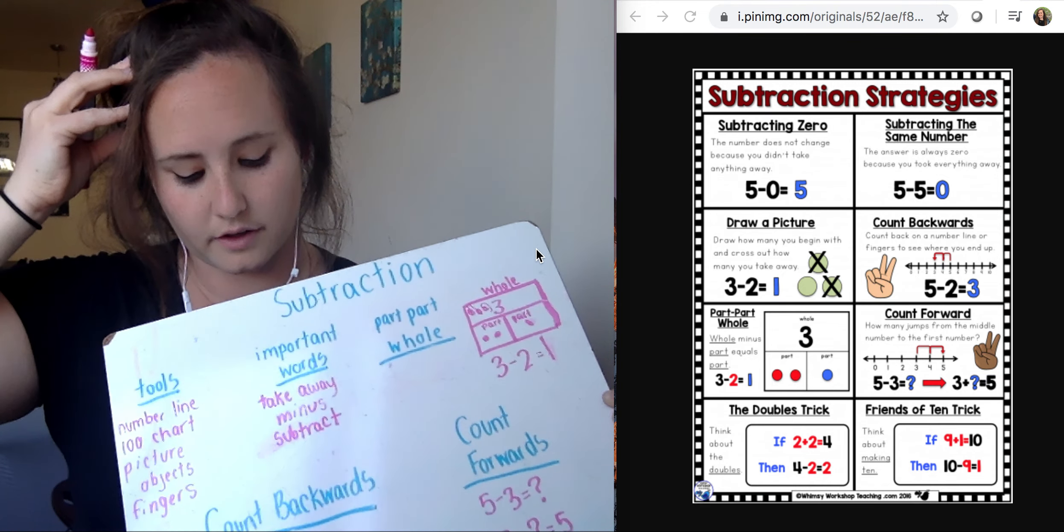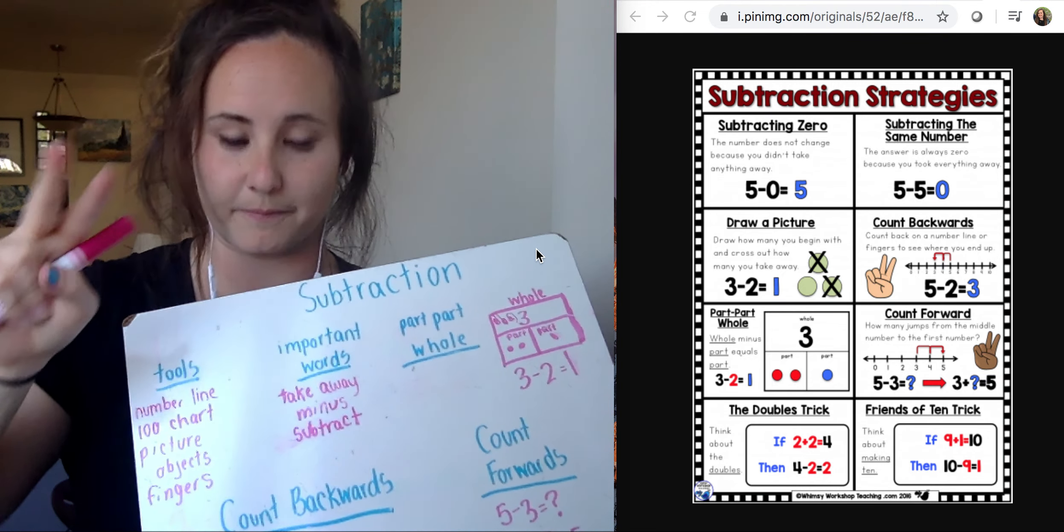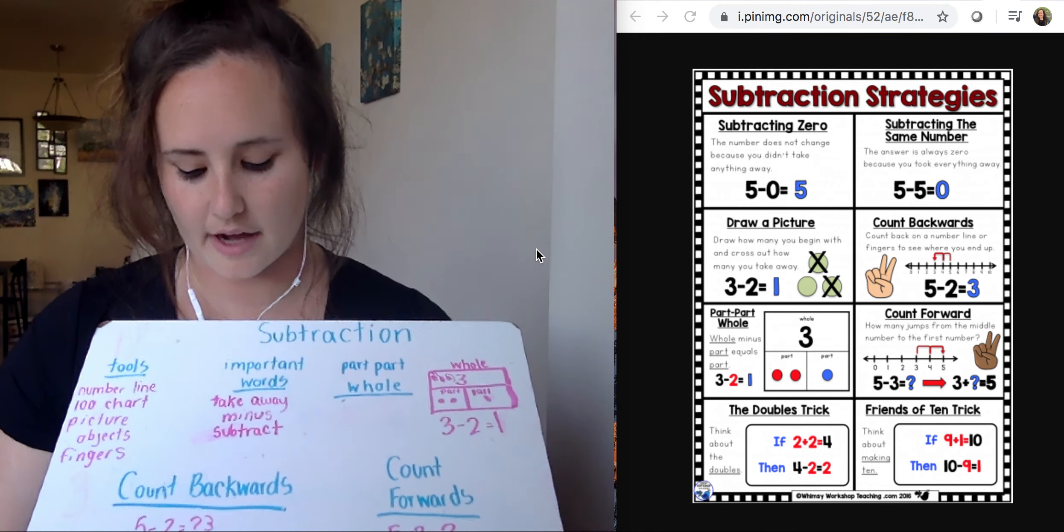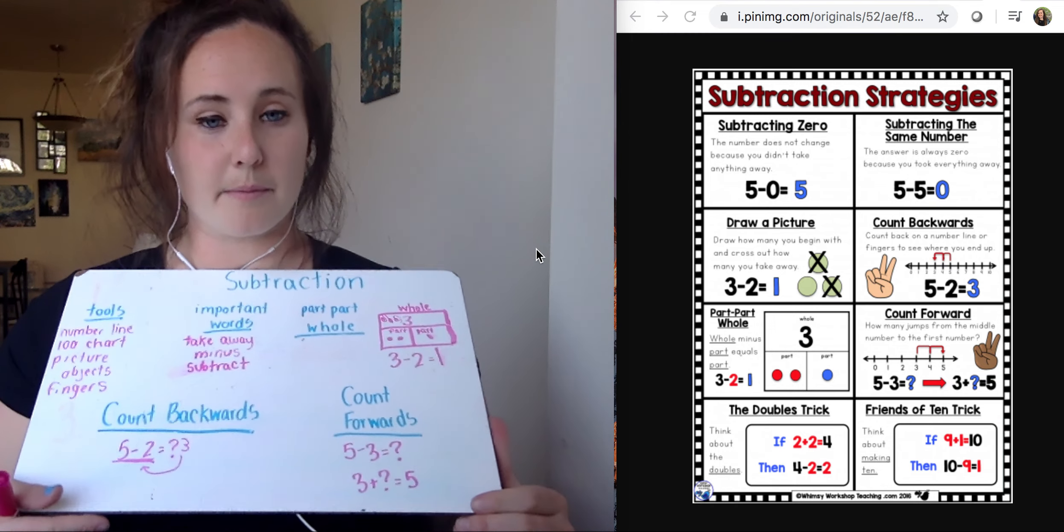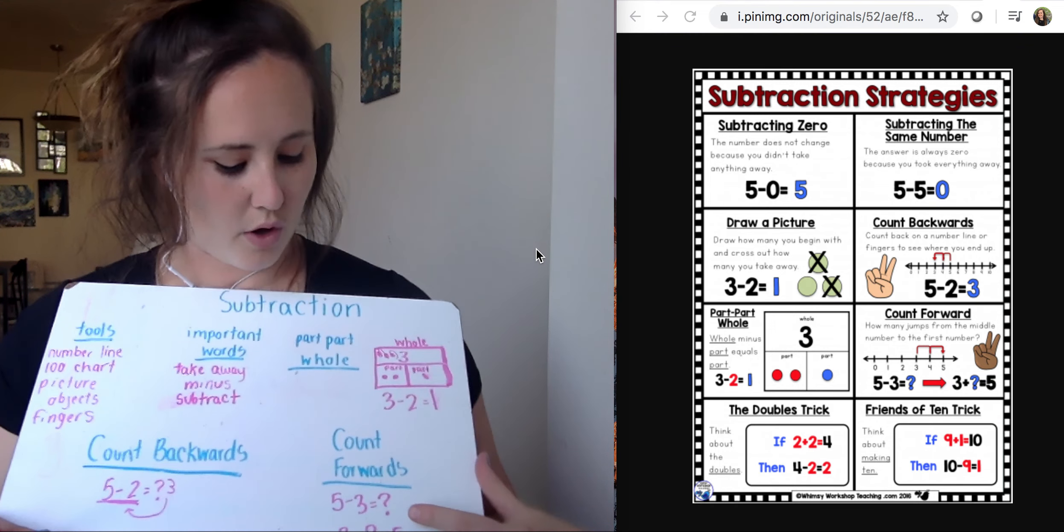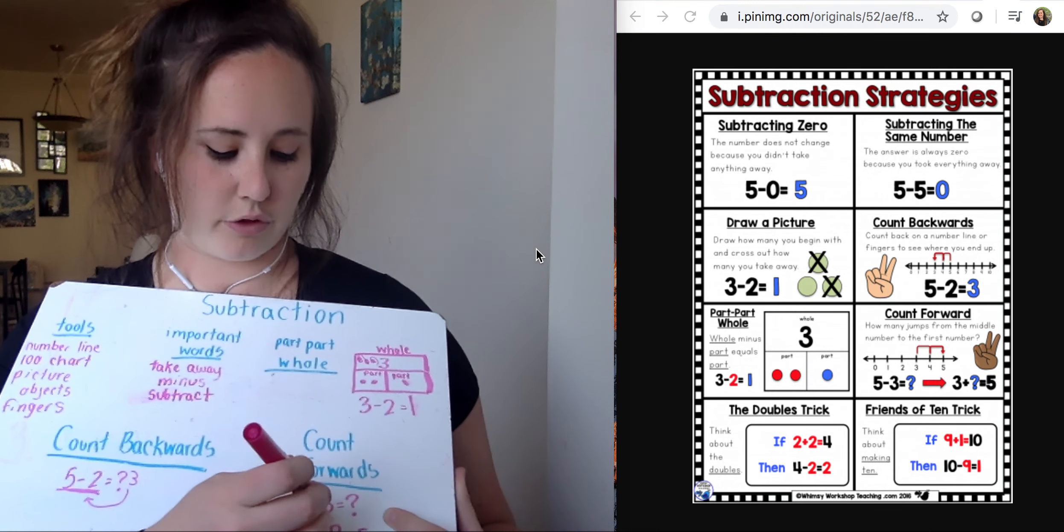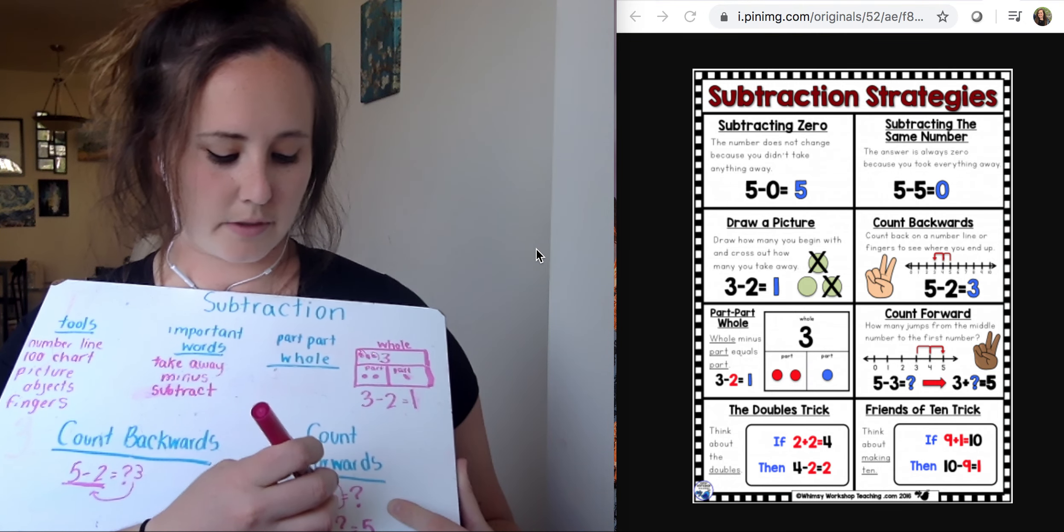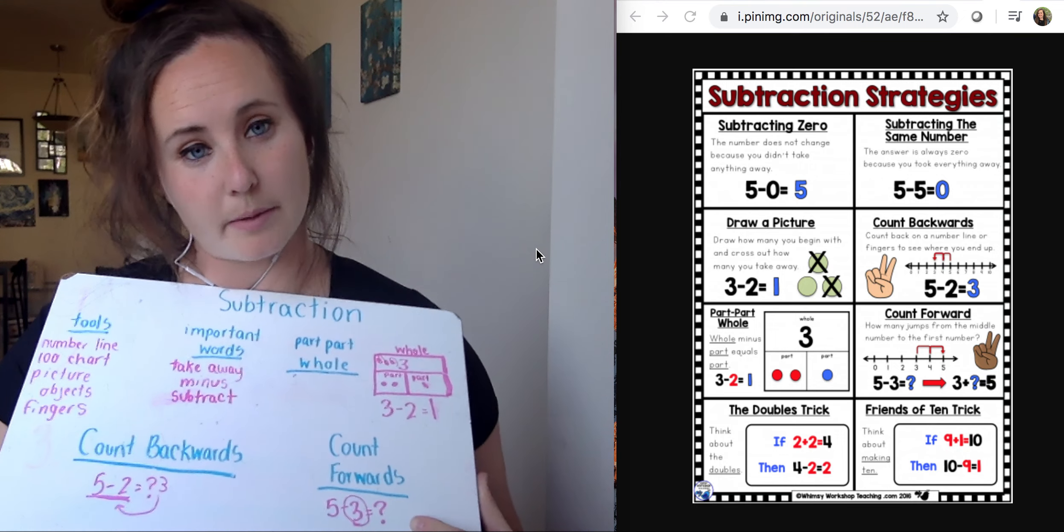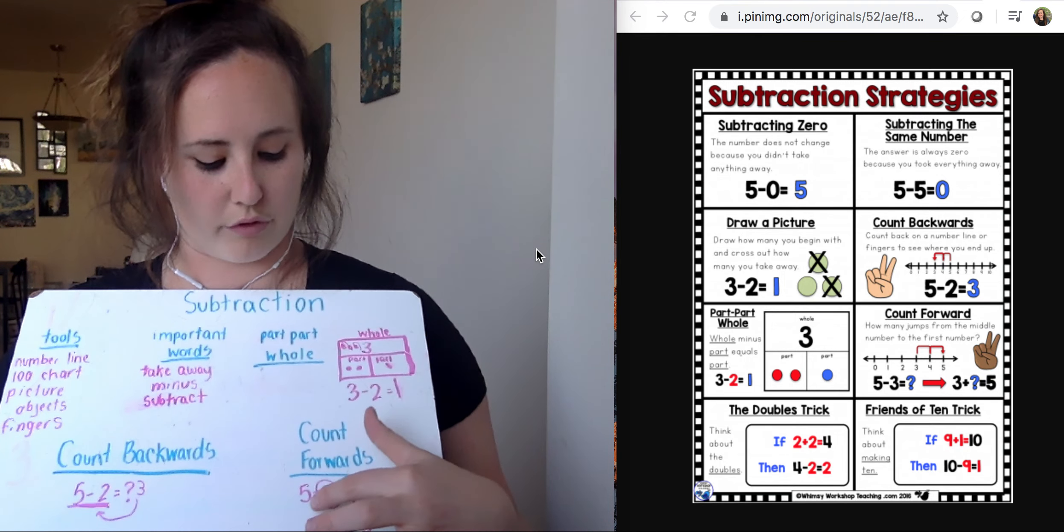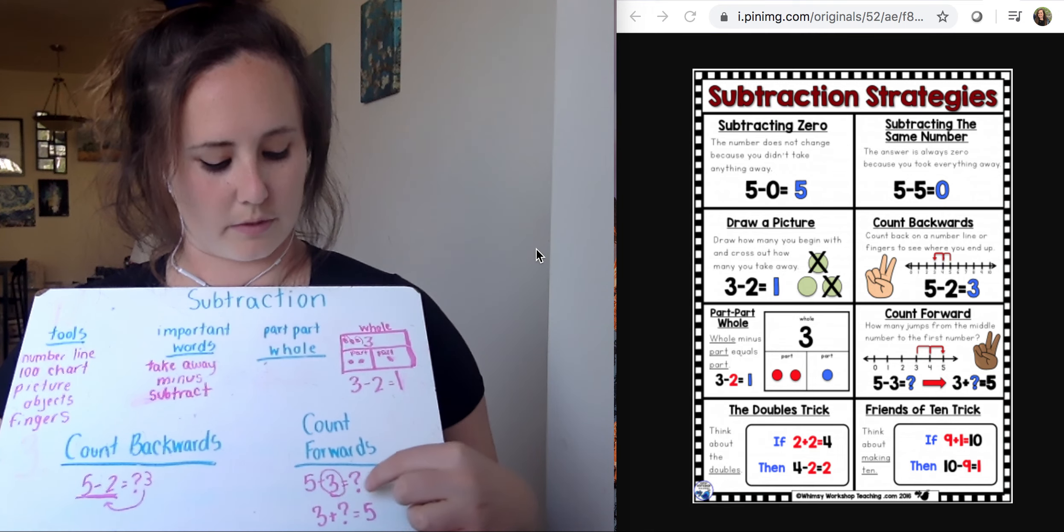Five, four, three. And then our last way we talked about in school was counting forwards. So kind of a switch from counting backwards. But counting forwards, we would start at our smaller number. So three is my smaller number. So I start my smaller number, I count up to my bigger number. So 3 plus what equals 5.